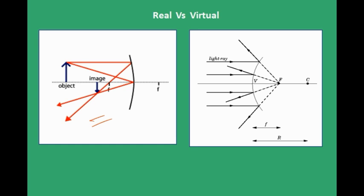When rays actually intersect at a point after reflection, that is called a real image. When rays don't actually intersect but appear to diverge from a point, it is a virtual image. Real images can be caught on a screen — you can place a paper or cardboard and get the image on it — but virtual images cannot be caught on a screen.